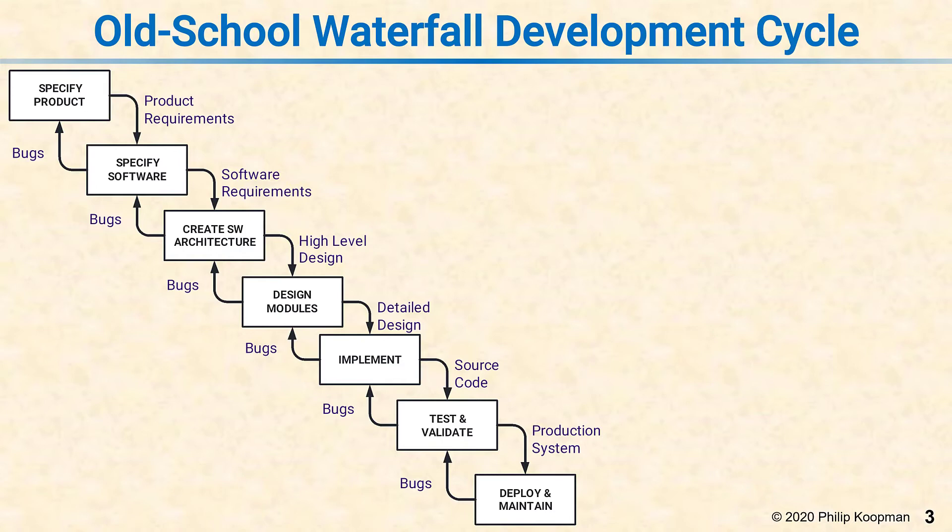First they're specifying the product, which is product requirements, then they're specifying the software requirements, creating a software architecture which results in a high-level design, designing individual pieces — individual modules — which gives you a detailed design.